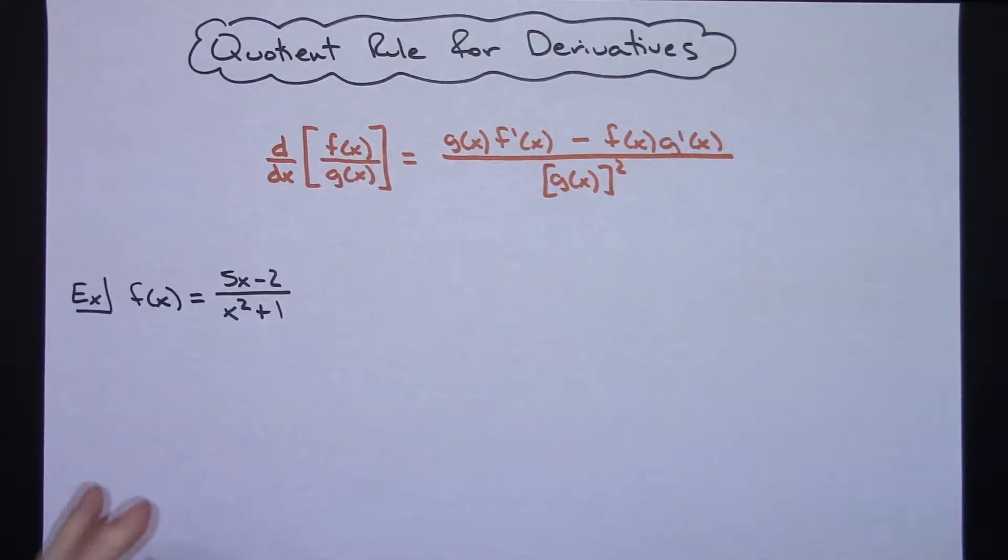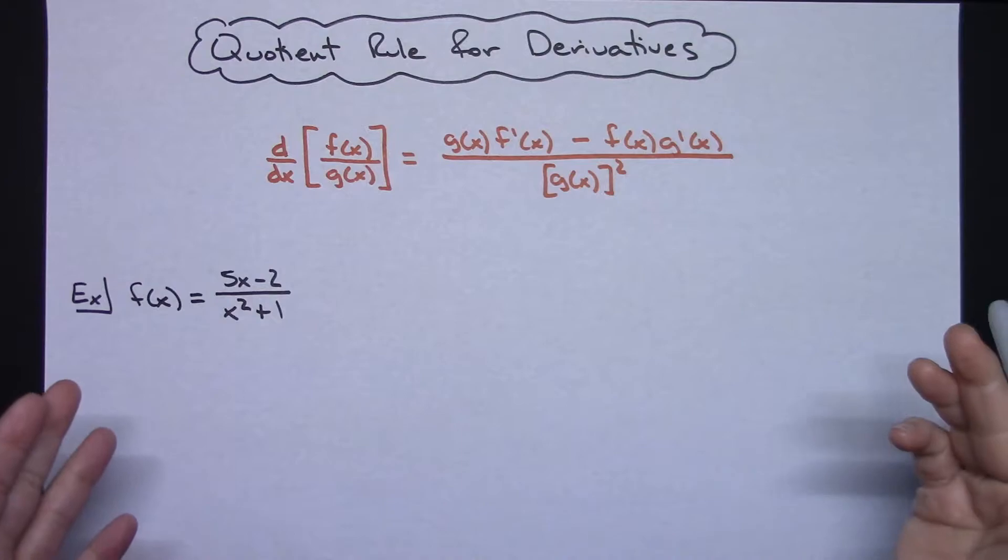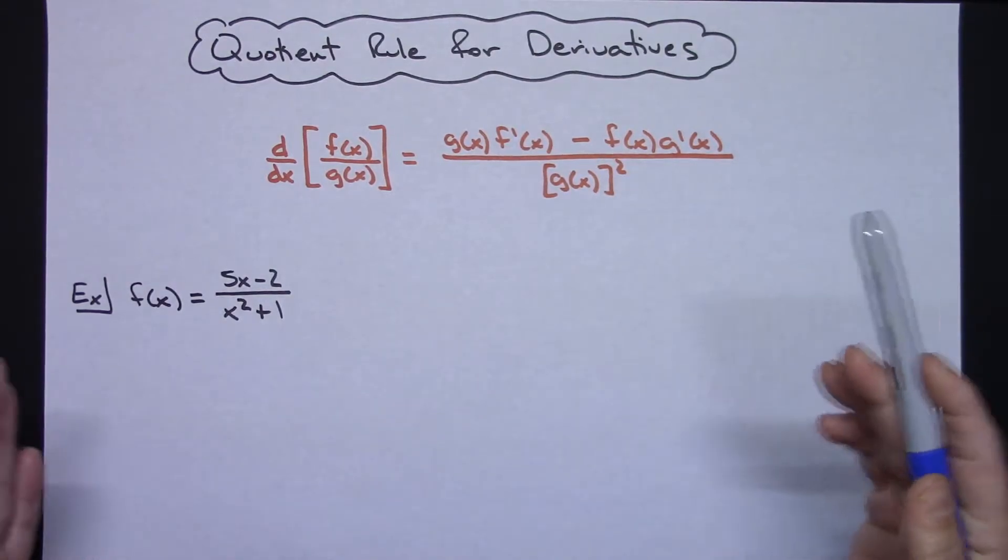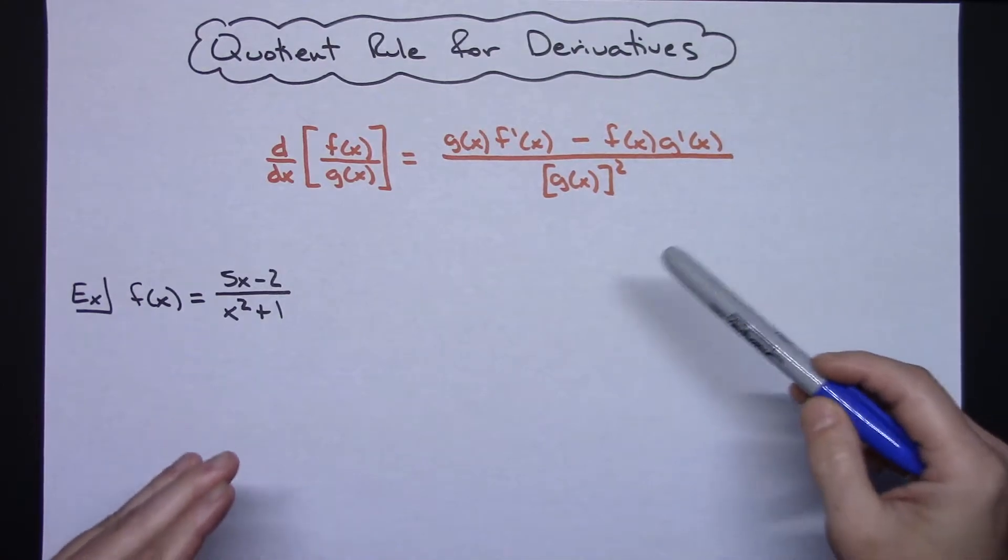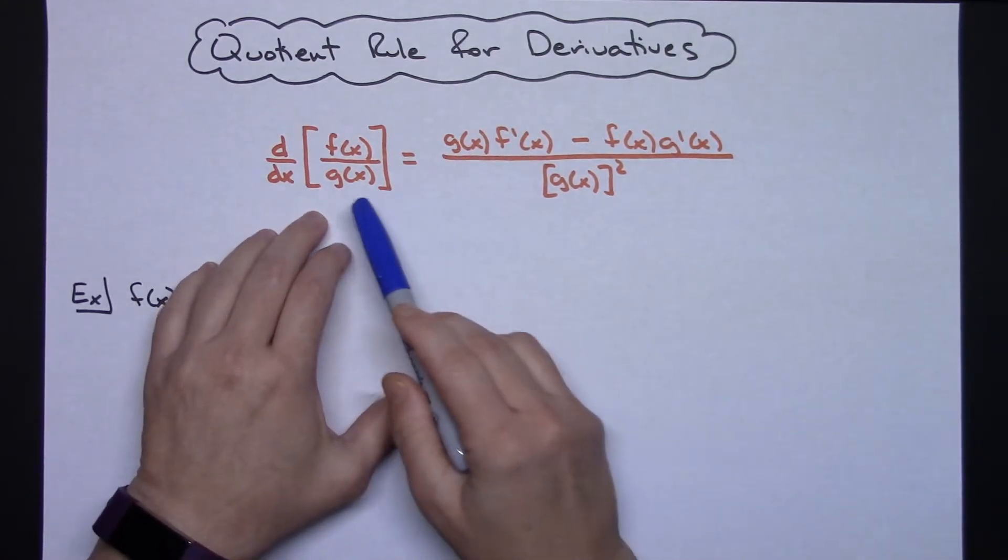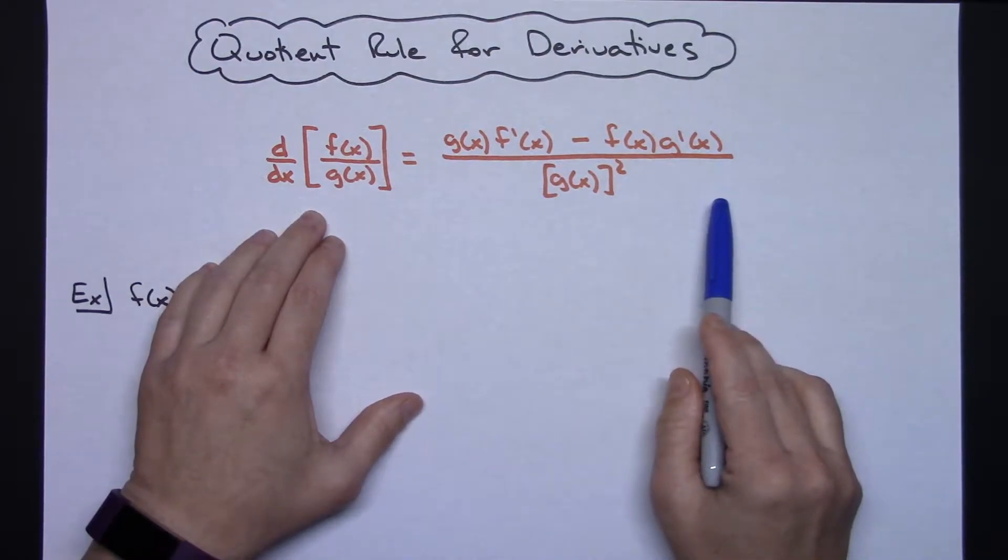In this video I'm going to introduce the quotient rule for derivatives. We'll just go through one straightforward example implementing the actual quotient rule. So what I have done here is I have started with writing the formula down.